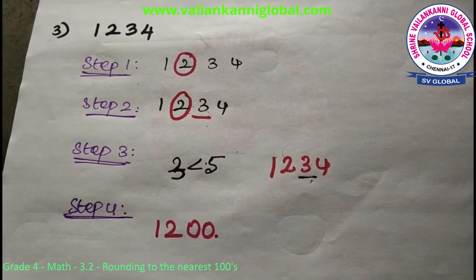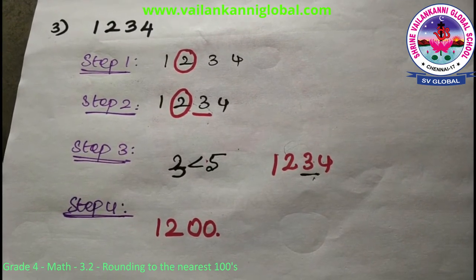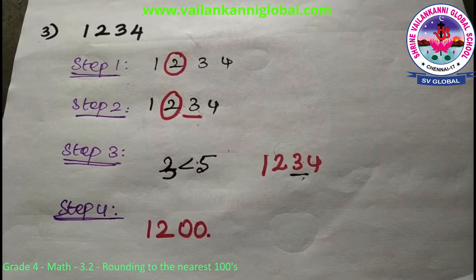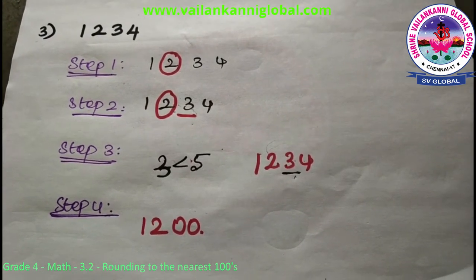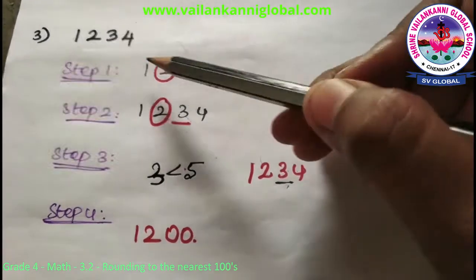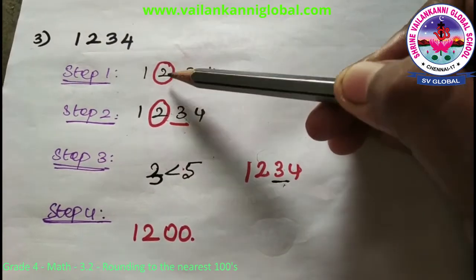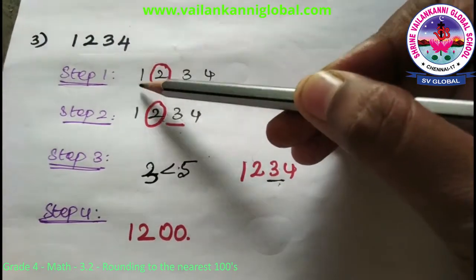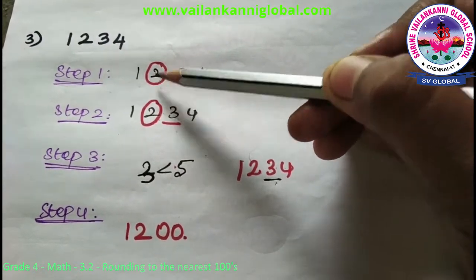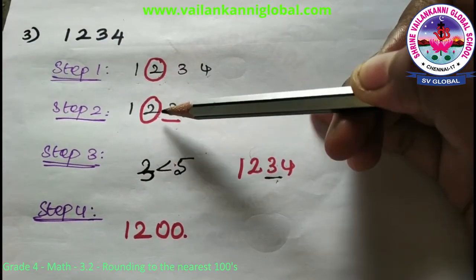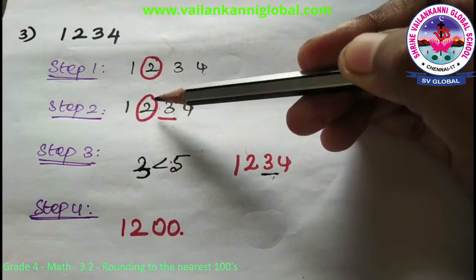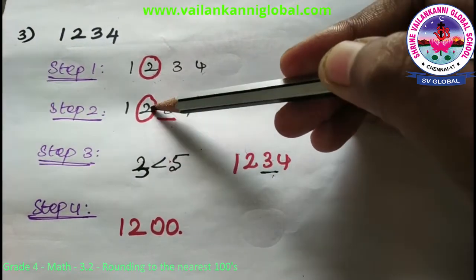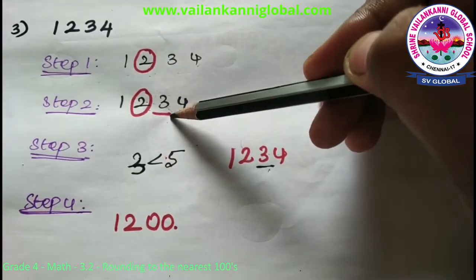Now look at this 4-digit number: 1234. Step 1 — find the hundreds place and circle it. The place values are ones, tens, hundreds, and thousands, so 2 is the hundreds place — circle it. Step 2 — underline the digit to the right of the hundreds place. The digit to the right of 2 is 3, so underline it.